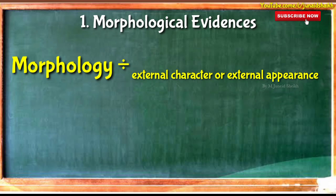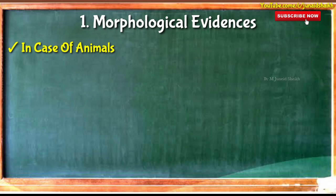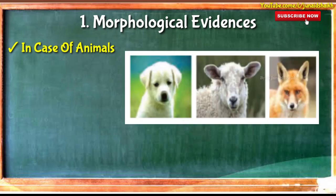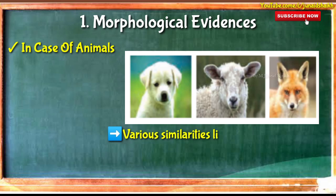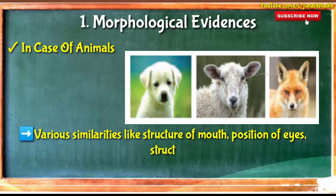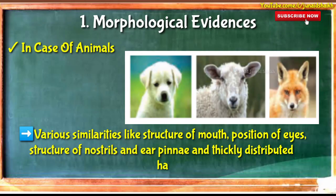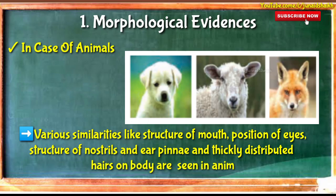Now, morphological evidences in the case of animals. See this picture — various similarities like structure of mouth, position of eyes, structure of nostrils and ear pinna, and thickly distributed hairs on the body are seen in animals.